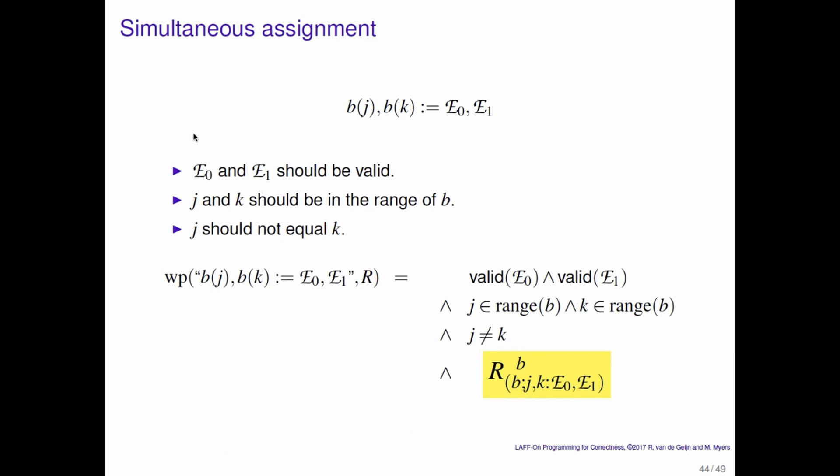The idea of simultaneous assignment extends to assignment to arrays. Here the expressions e0 and e1 should be valid; j and k should be in the range of v; and j should not equal k, because if the two indices are not one and the same there would be some confusion. The weakest precondition for simultaneous assignment to array elements requires e0 and e1 to be valid, j in the range of v, k in the range of v, j not equal to k, and then you do a substitution of a copy of b but with the elements indexed by j and k replaced by their respective expressions into every free occurrence of b.